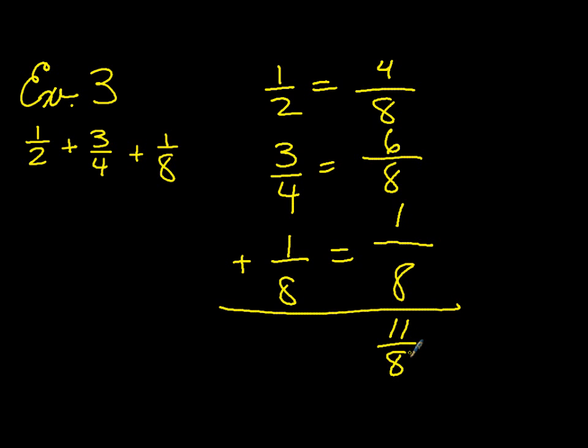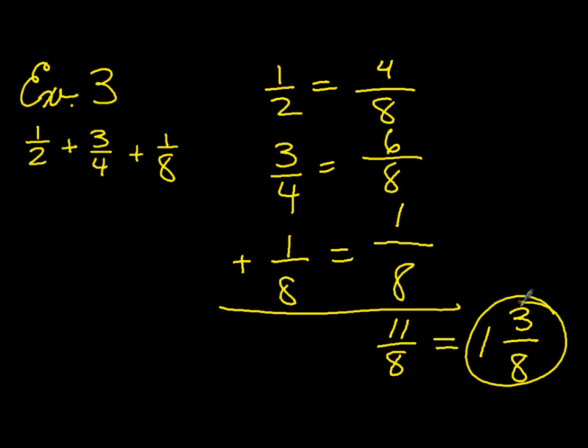You can see it's improper, so we'll have to convert it to a mixed number. Eight goes into eleven one time with three left over. We have one and three-eighths.